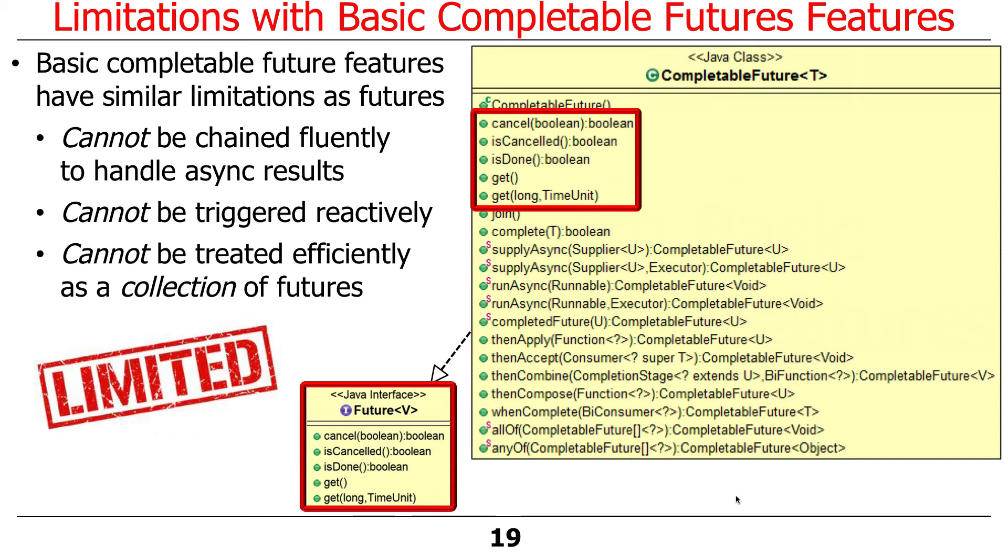I'll show you what that means in a second, if that doesn't make sense yet. You can't trigger these things reactively. You can't, for example, wait for multiple futures efficiently. You have to wait for them one at a time. And you can't treat a group or collection of futures efficiently as a group. Those are things you can't do. There are limitations with this very simple interface.